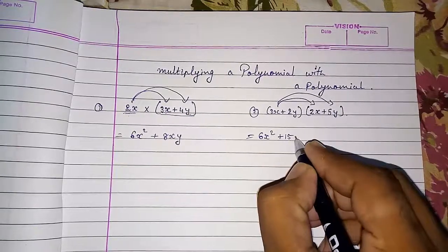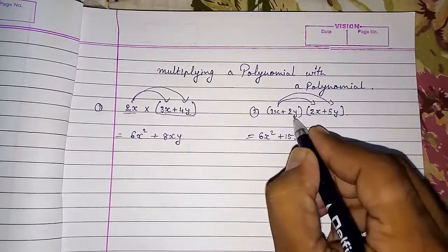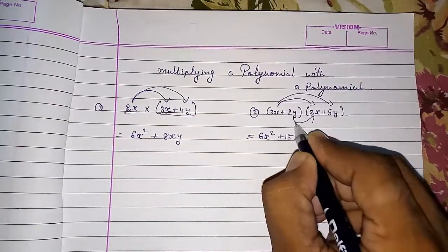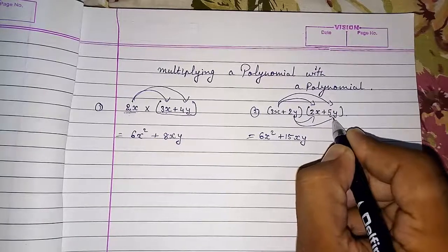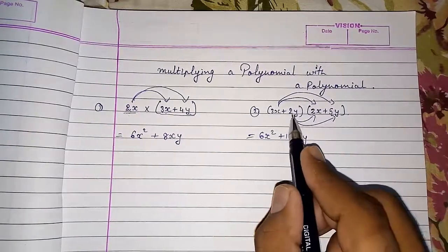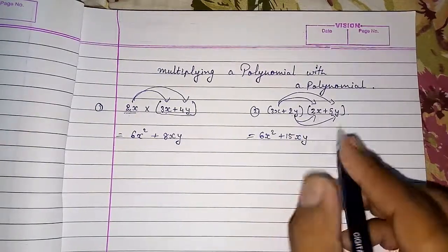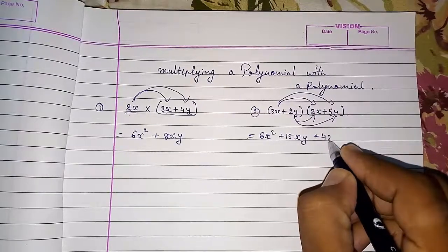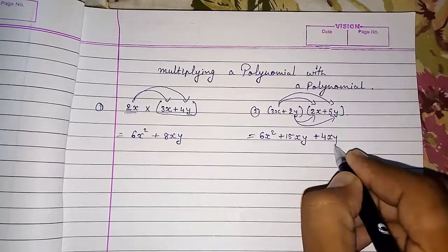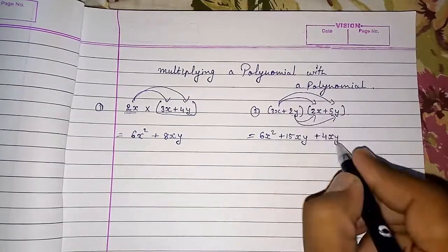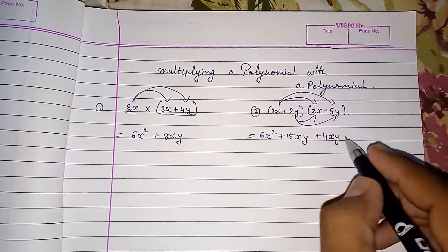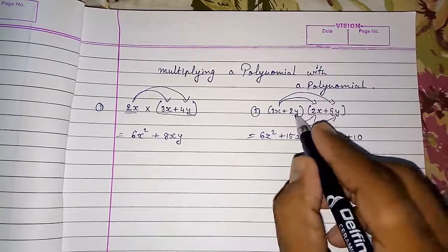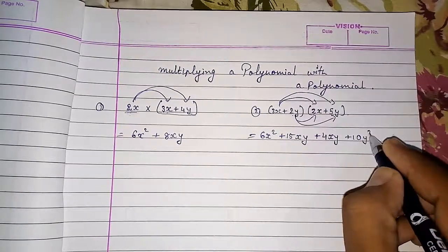x into y is xy, giving us 15xy. Then we will multiply 2y with both the numbers. So 2 into 2 gives plus 4xy. Then 2 into 5 is 10, and y into y is y square.